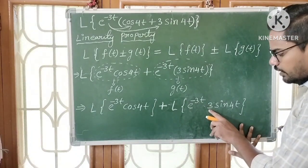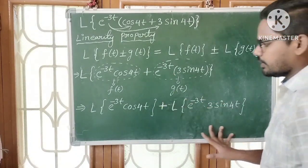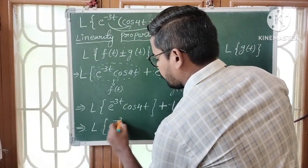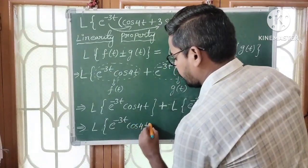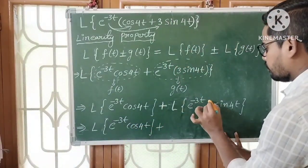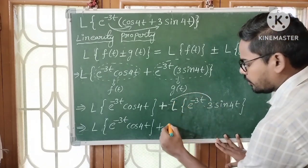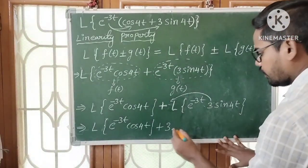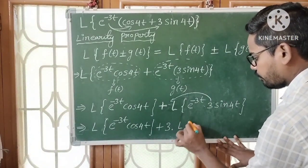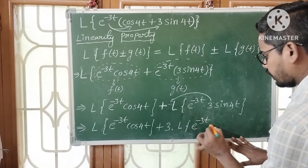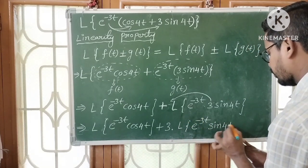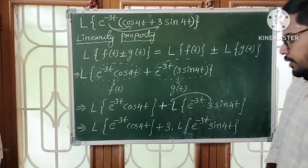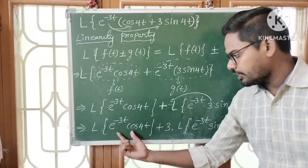Here, 3 is a constant. We take 3 out of the Laplace transform. So we can rewrite as: L{e^(-3t)·cos4t} plus 3 into L{e^(-3t)·sin4t}. We have to find the Laplace transform of this function and this function.